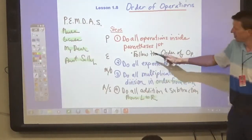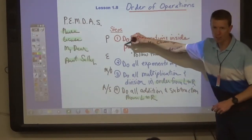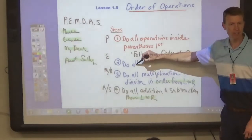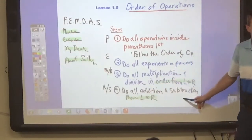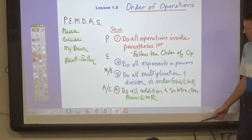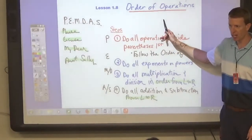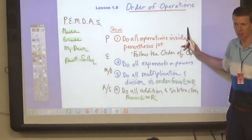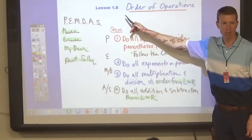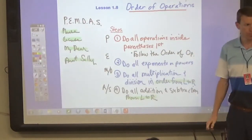That's all in step three, and you want to complete all of the multiplication and division before going on to step four. You should complete each step before moving to the next. The last step is addition and subtraction — again, do them in order from left to right. So if you have subtraction, then addition, then subtraction, that's the order you do them. Same for division and multiplication — do them left to right.